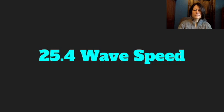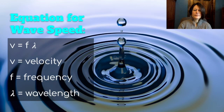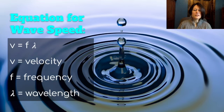Wave speed: the equation for wave speed is velocity equals frequency times wavelength. So what affects the speed of a wave is frequency and wavelength. We will be doing some problems with this equation in class.